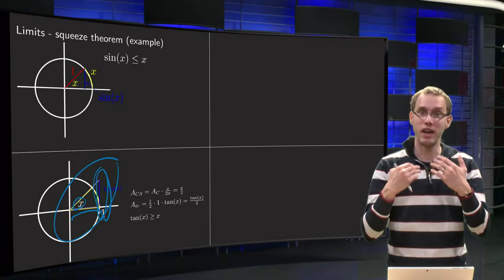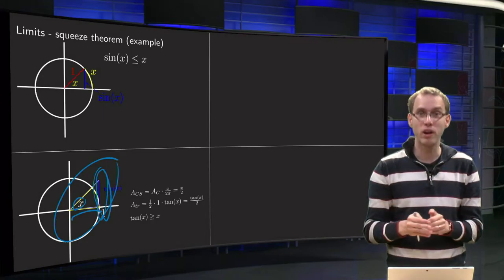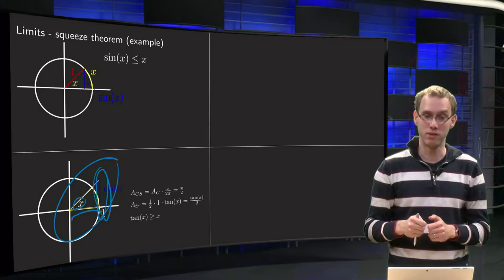So the area of this part equals x over 2 pi times the total area of the circle, so x over 2 pi times pi equals x over 2.